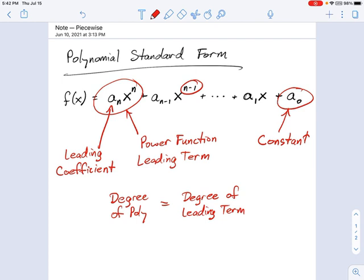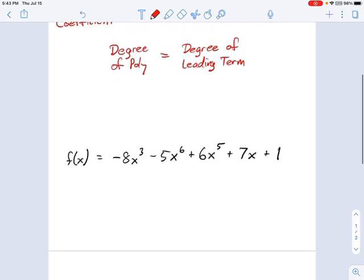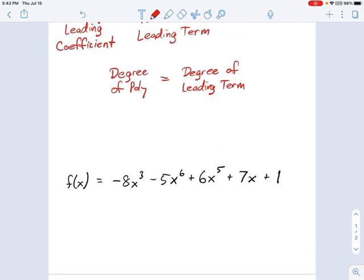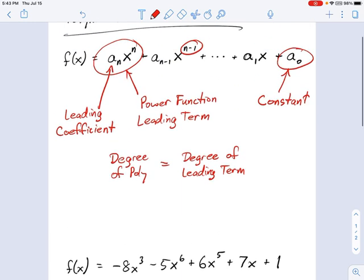So I think it's a good point now to get into an example that has more numbers on it so we can get a handle of this. So right here I have this polynomial, negative 8x cubed minus 5x to the 6th plus 6x to the 5th plus 7x plus 1. And you should be able to see that this is not in standard form, even though it looks a lot like that one up there.